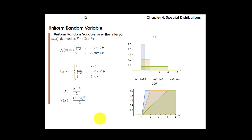This is the notation we're going to use for random variables. X is distributed as, or has, the uniform distribution between a and b. The tilde symbol means 'has the distribution.' For the uniform we use the letter capital U, and the uniform distribution needs two parameters: a and b.